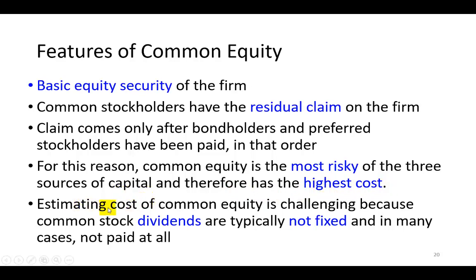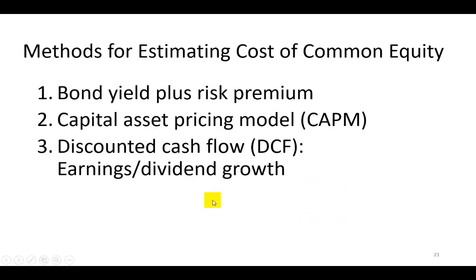As it turns out, estimating the cost of common equity is quite challenging. That's primarily because the dividends paid to common stockholders are typically not fixed, and in many cases are not even paid at all. So we get creative in how we estimate the cost of common equity. These are three of the basic methods: the bond yield plus risk premium approach, the capital asset pricing model (CAPM), and the dividend discount model, which is the discounted cash flow technique.